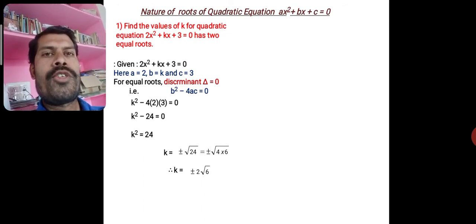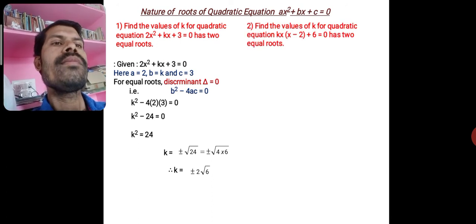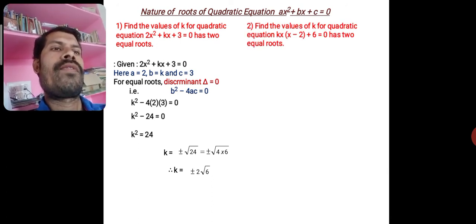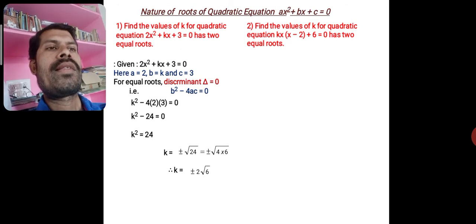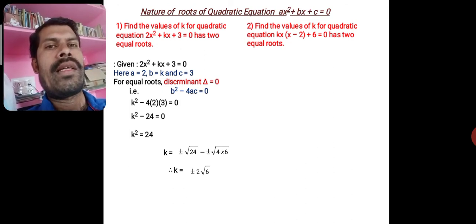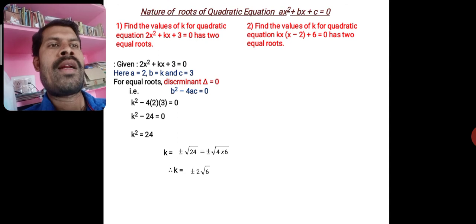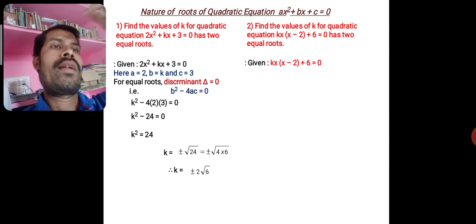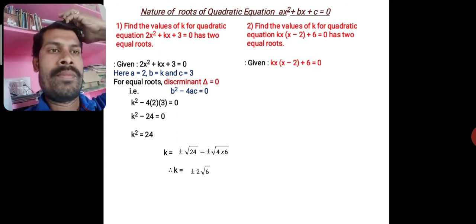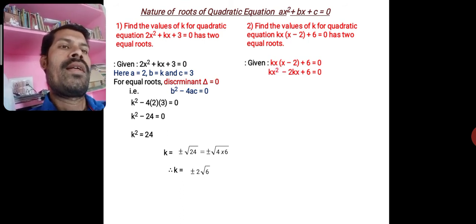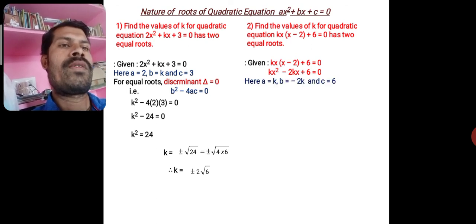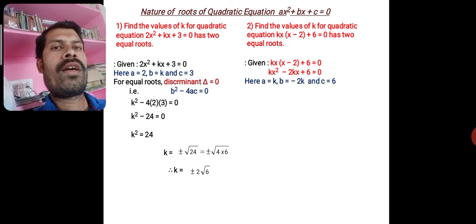We get two values for k because k's highest power is 2. Now consider the next problem: find the value of k for which the quadratic equation kx(x − 2) + 6 = 0 has two equal roots. The equation is not in standard form, so first multiply out: kx² − 2kx + 6 = 0.